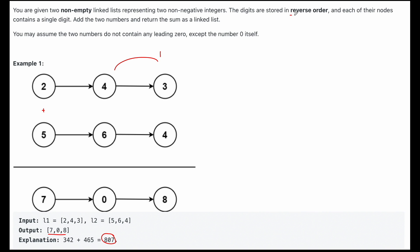So that's how we get the final answer of 7-0-8. And remember that it's really 807 because it's in reverse order, but we just return the linked list. Okay, so we read the question prompt and we went over the example. Let's think about the algorithm we want to use to solve this.